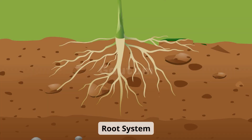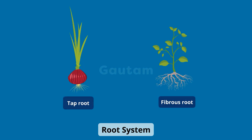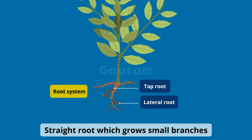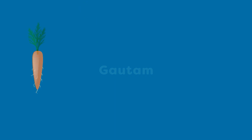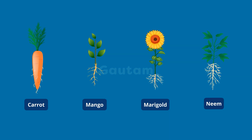Roots are of two types: tap root and fibrous root. A tap root is a straight root growing downwards. Small branches arising from it are called lateral roots. Carrot, mango, marigold and neem have tap root systems.